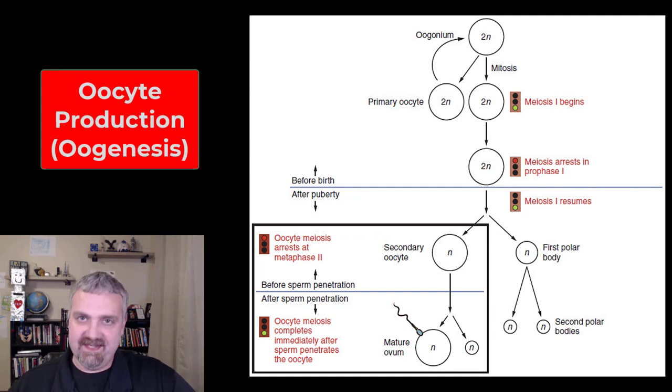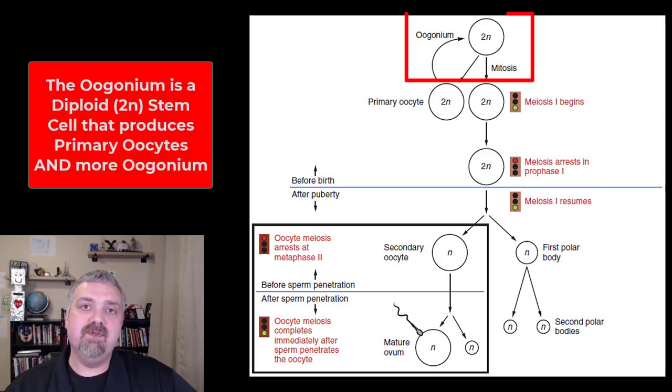So we are going to look at gametogenesis, which is the production of a gamete, but in a female it is called oogenesis, whereas it was spermatogenesis in males. Oogenesis is the production of this functional egg that can be fertilized to become a zygote. We are going to start at the top with the oogonium, which is the stem cell.